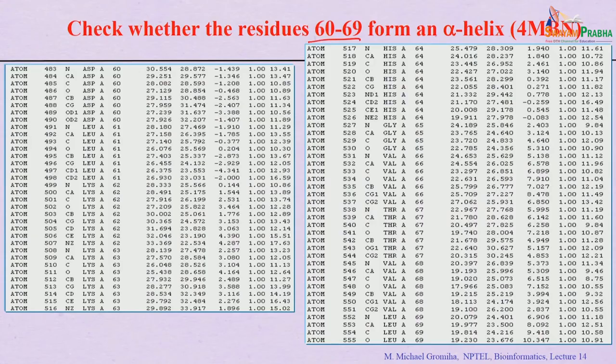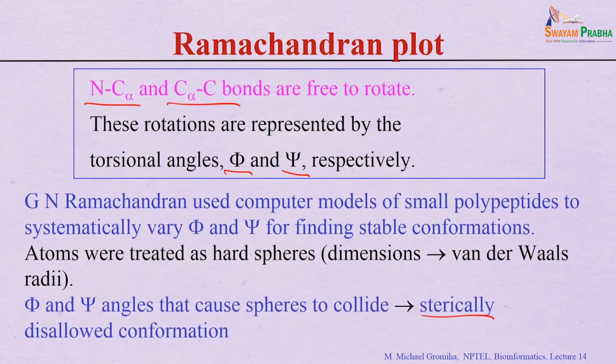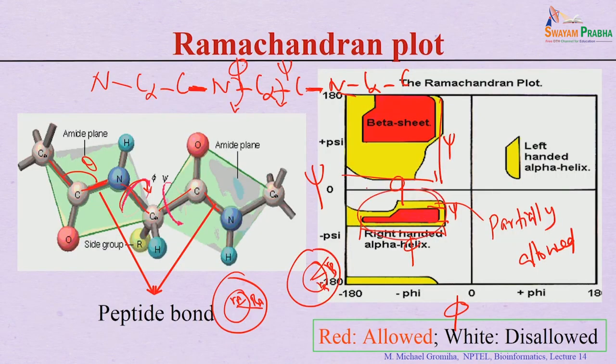As an example, myoglobin is an all-alpha protein, and residues 60–69 are known to form an alpha helix. To verify this, we calculate the phi and psi angles from the main chain atoms and check whether those angles fall within the allowed region of the Ramachandran plot. If the phi/psi angles are within the alpha helix allowed region, we can confirm those residues belong to an alpha helix. Based on the 3D structure and hydrogen bonding pattern, secondary structures can be easily defined.